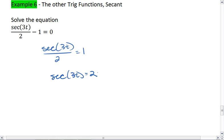What I would then do is change this into a trig function that you know. Secant of 3t equals 2, and we know that secant of x is 1 over cosine x, to alter this into saying that cosine of 3t equals 1 over 2.